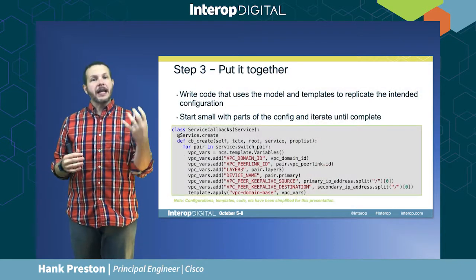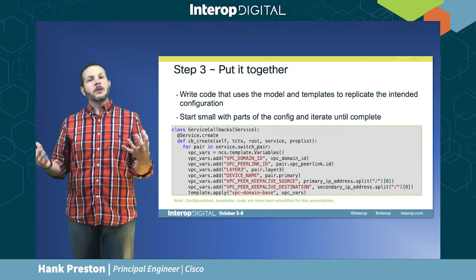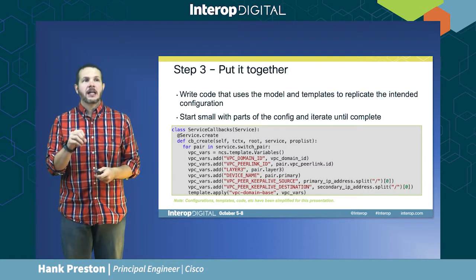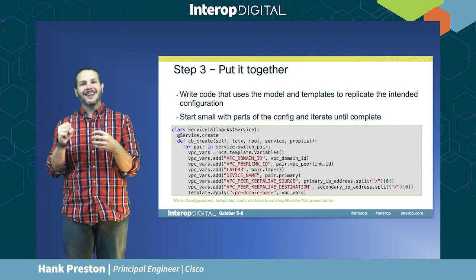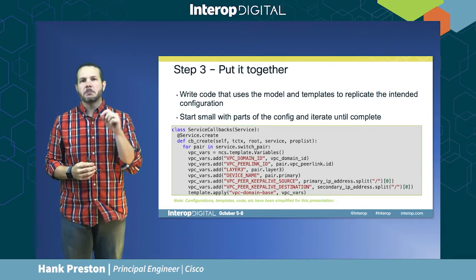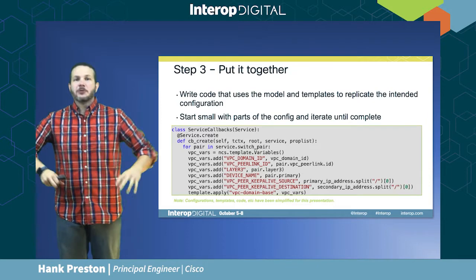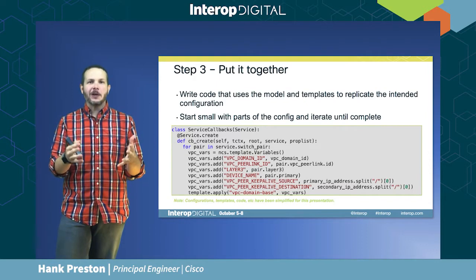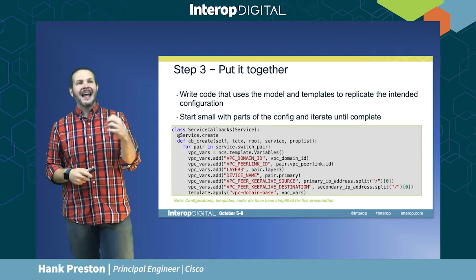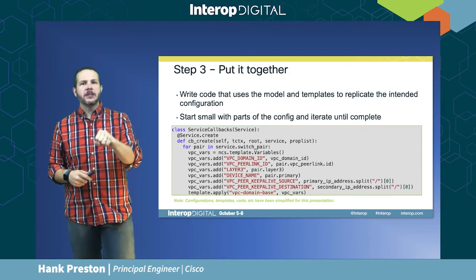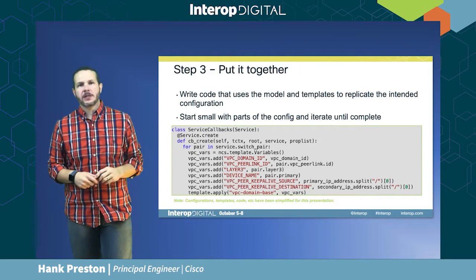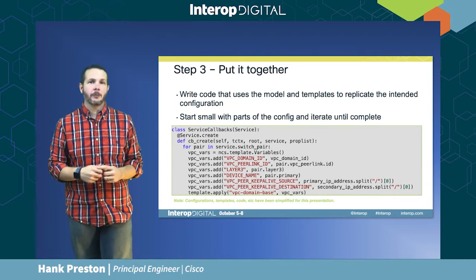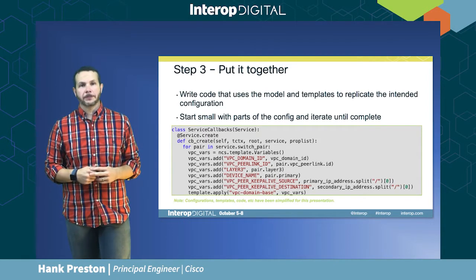Step three is where the data model from our pseudocode is put together with those templates, done in Python. Here you can see a simplified representation of some Python code that takes in and creates the variables to be injected into a particular template based on the service model being used. That was a quick run through of how we built these automation pieces. We've posted a lot of this service code on GitHub for anyone to look at, and there are links available at the end of the presentation.